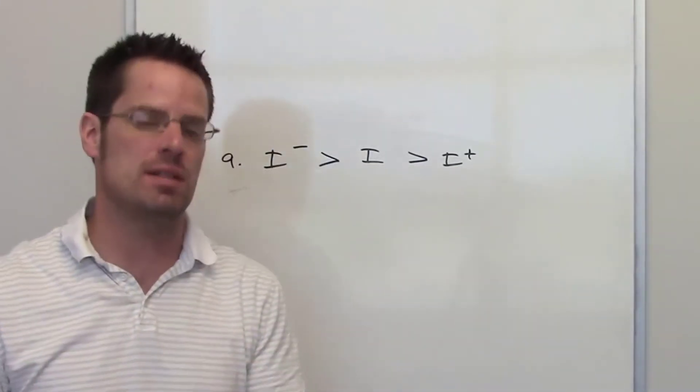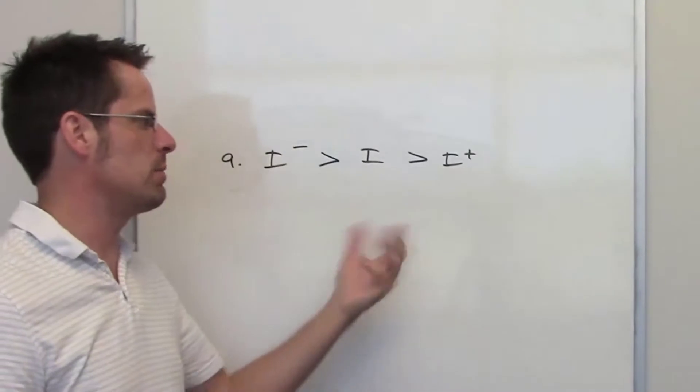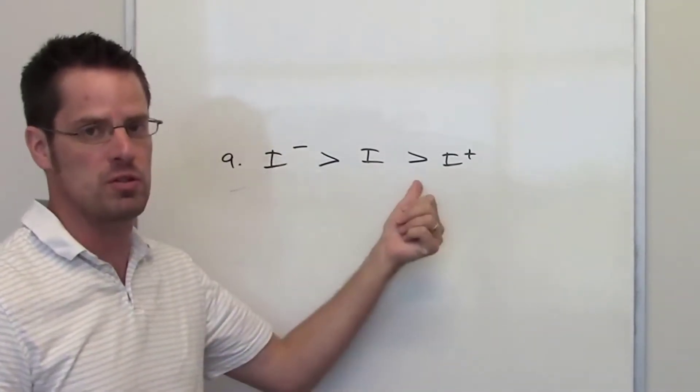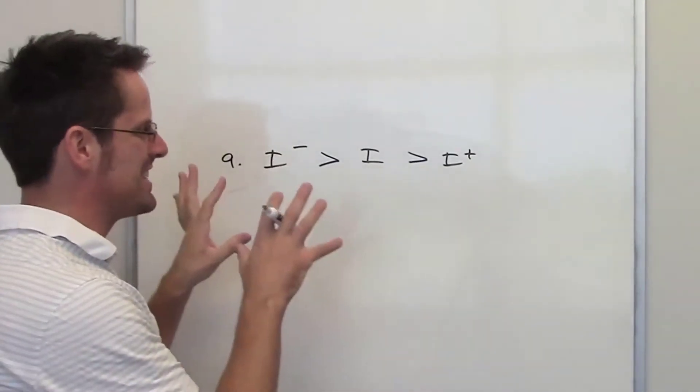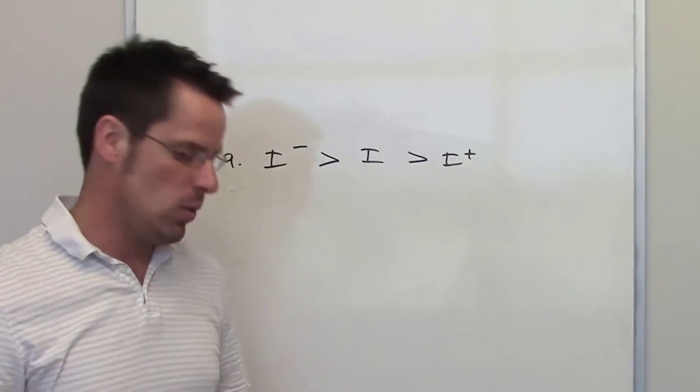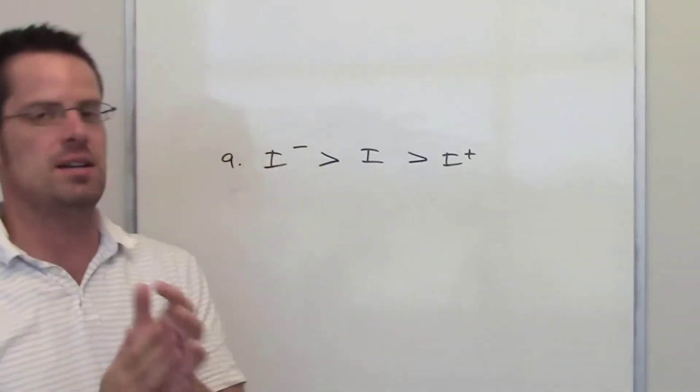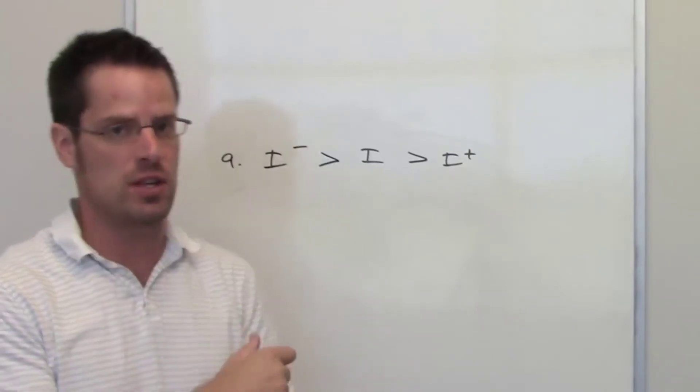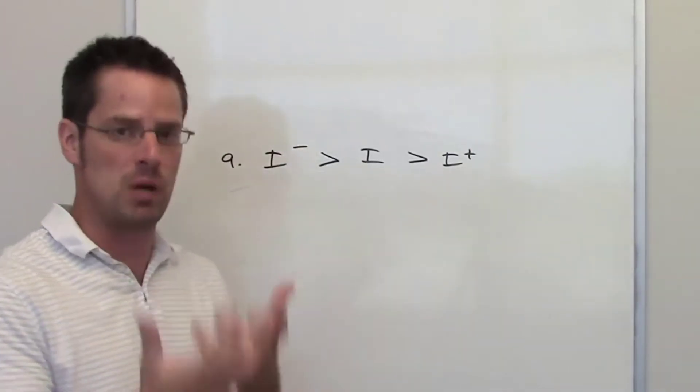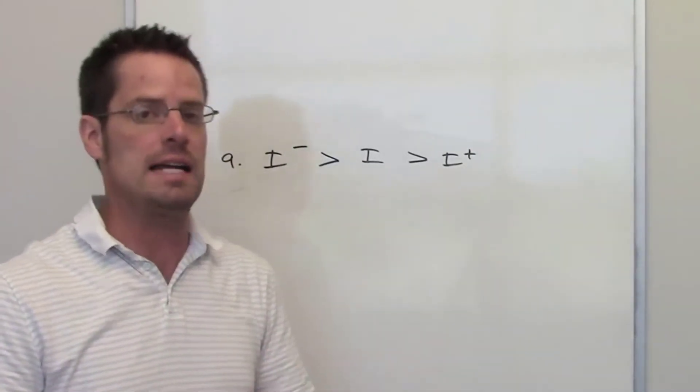we can't talk about size being different by virtue of there being any more or fewer orbitals from one to the next. They'll have the exact same number of orbitals. We also can't talk about size changing because of different numbers of protons in the nuclei because they'll have the same number of protons. They're all iodine.